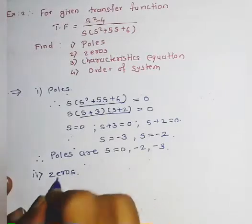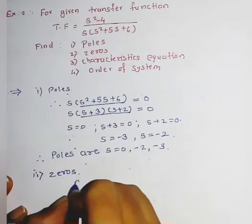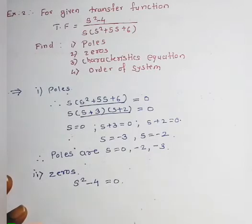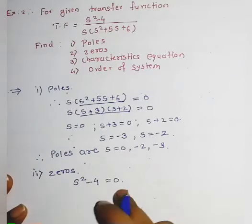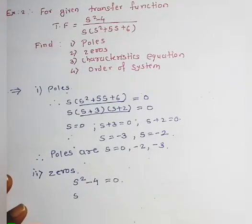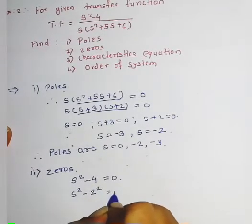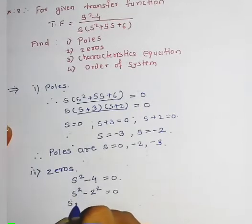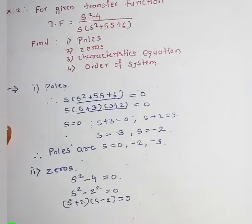Next, find out the zeros. Write the numerator term equal to zero: s² − 4 = 0. We know that s² − 4 is a difference of squares, which follows the standard formula (a² − b²) = (a + b)(a − b), giving factors (s + 2)(s − 2) = 0.